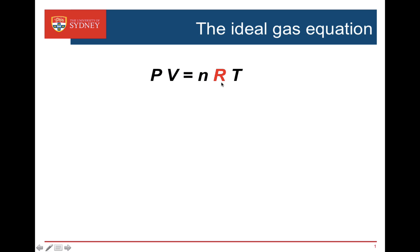Now the ideal gas equation relates the pressure, the volume, the number of moles and the temperature of a gas and all R is is the proportionality constant or the gas constant.